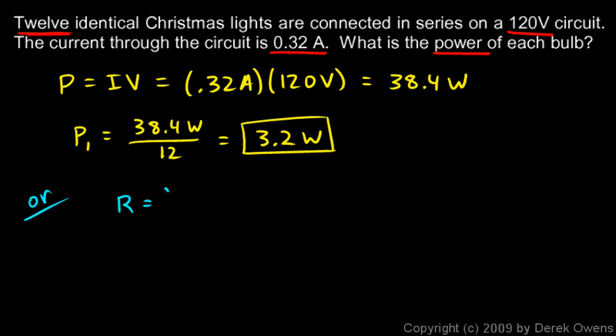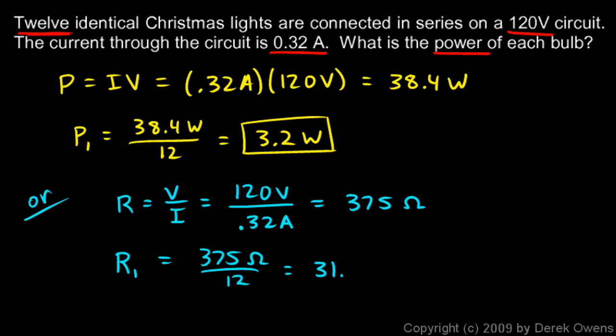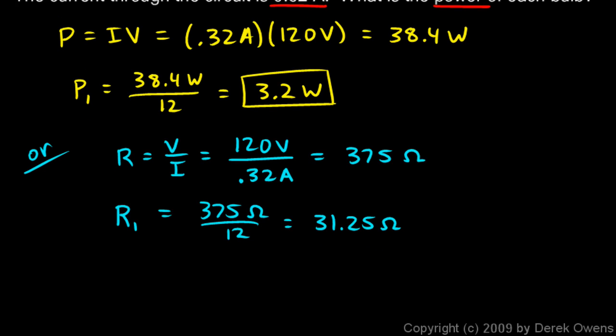Another way to solve it: we could say R is V over I, Ohm's law. We know there's 120 volts and 0.32 amps—those two things were given in the problem. We do the calculation and we get 375 ohms, so that's the total resistance for the whole circuit. The resistance for any one of them will be one-twelfth of that because there's 12 bulbs. So 375 ohms divided by 12 comes out to 31.25 ohms. That's the resistance for one bulb.